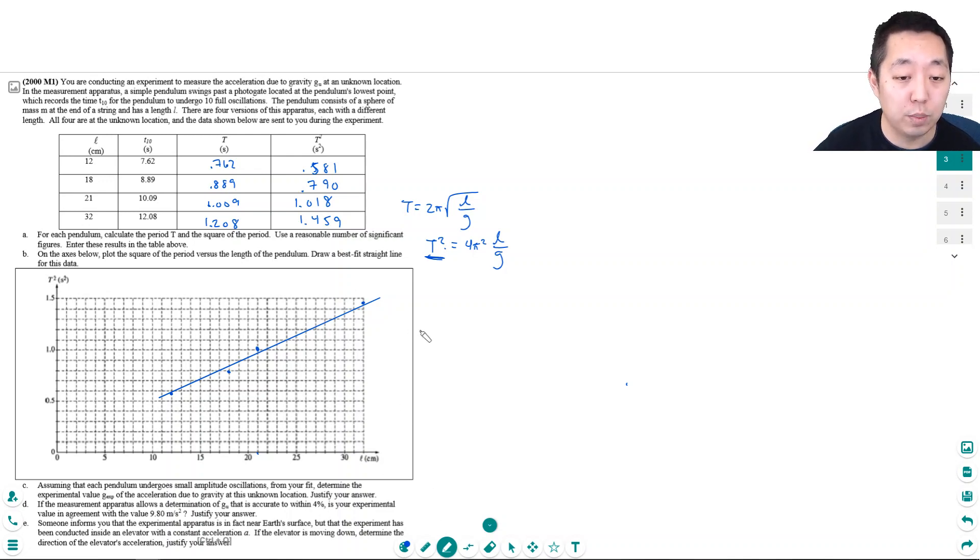Assuming each pendulum undergoes small amplitude oscillations, determine the experimental value of g from your fit. First, we calculate the slope. From the equation, the slope should be 4π²/g. I'll pick two points and take the difference—I'll pick points far apart to help accuracy.